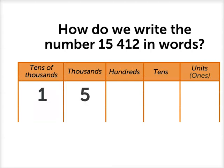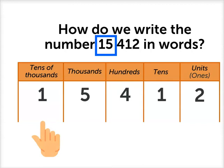One, five, four, one, two. First of all, let's look at how many thousands we have. We have one tens of thousands and five thousands. Together, that makes 15,000.